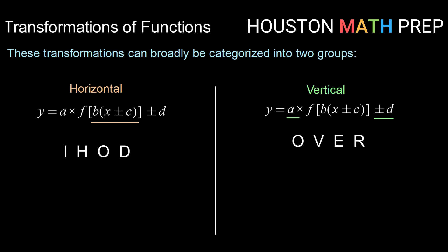And we have these mnemonics, IHOD and OVER, to help us remember which is which. So for horizontal transformations, we're going to find those on the inside of our function notation. They are going to change our graph horizontally. They are going to be the opposite of what you might think. So that's the whole plus moves you to the left, minus moves you to the right. It's kind of opposite of what it looks like. And because we're moving left to right, messing with our x values, that is going to affect the domain of our function.